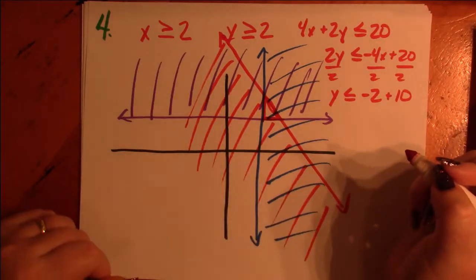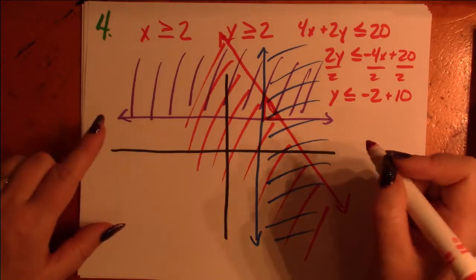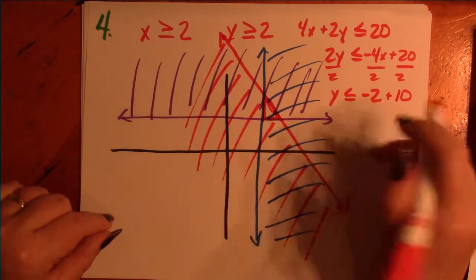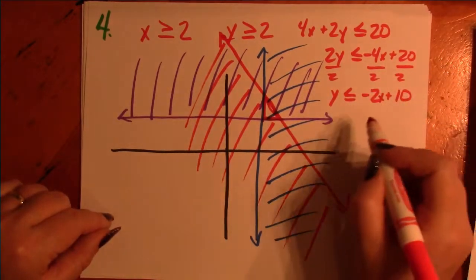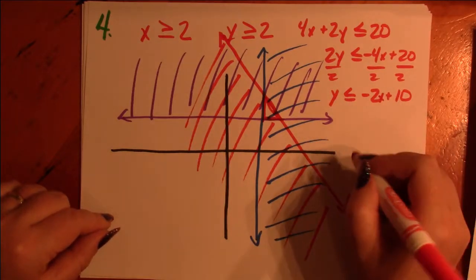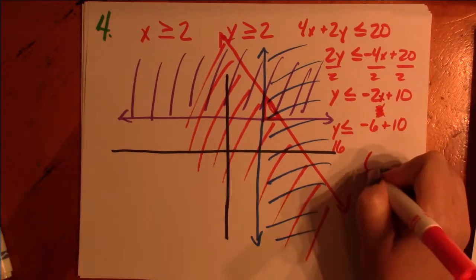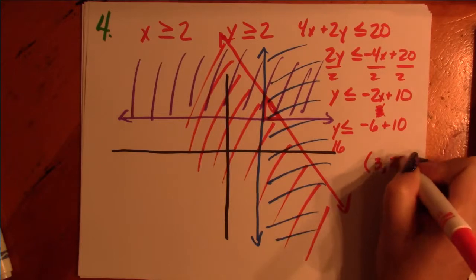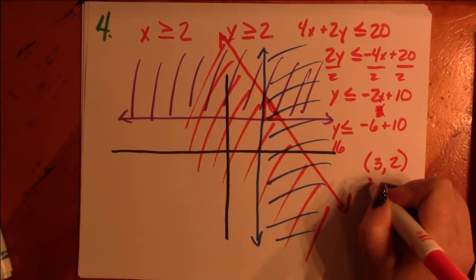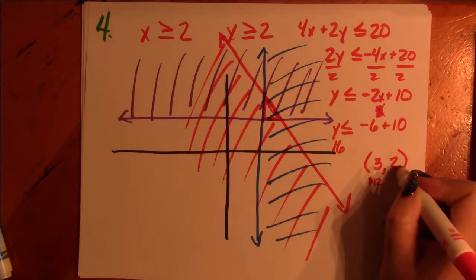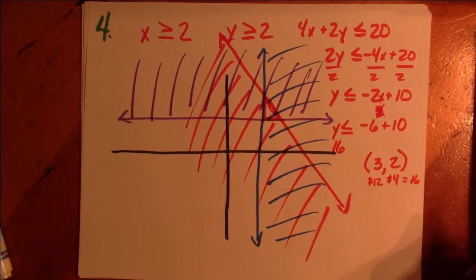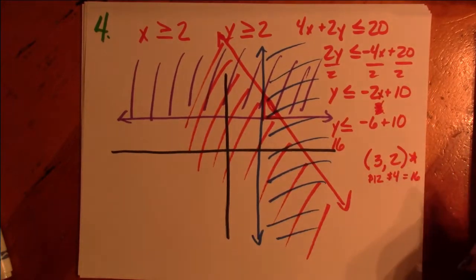We're going to list two possible combinations. So we know that X has to be larger than 2 and still satisfy this equation here. So let's try 3. Is 3 and Y is 2. If X is 3, 3 times 4 is $12 and 2 times 2 is $4. And look, that comes under $20. So 3, 2 works.